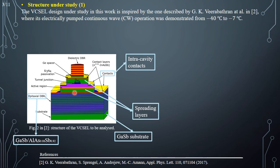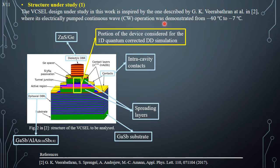This is done in order to reduce optical absorption losses. Then, within the cavity, we have many layers. For instance, there are the spreading layers whose job is to bring the current from the contacts to the active region in the middle portion of the device, where the current is laterally confined by means of a buried tunnel junction. On top of the entire device, there is the epitaxial DBR.